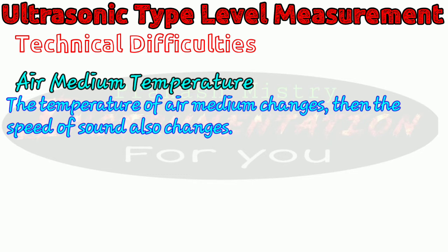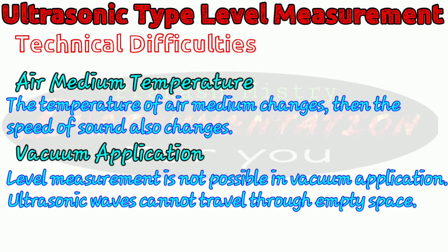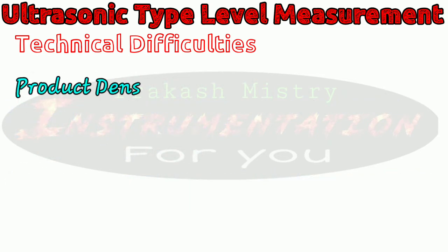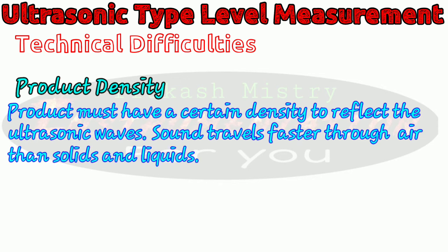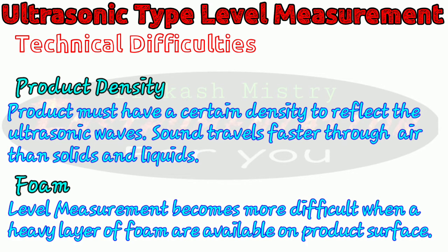The air medium between the ultrasonic level sensor and the product surface must be at the same temperature to give accurate data. In vacuum applications, level measurement is not possible with an ultrasonic level transmitter because ultrasonic waves cannot travel through empty space — they need a medium like gas, liquid or solid. Also, the product whose level we want to measure must have a certain density to reflect the ultrasonic waves. If there is a significant difference in density between the air and the product, we can get a good reflected signal. It becomes more difficult to measure the level of a liquid with a heavy layer of foam or bubbles, because foam can attenuate the signal either completely or partially.